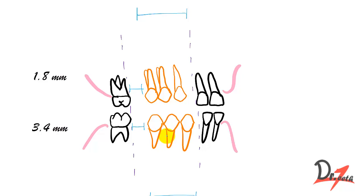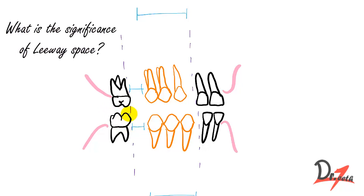Now you must be having a question in your mind: what is the significance of leeway space? This leeway space is utilized by the molar to drift mesially. So this molar will drift mesially and will help establish the Class 1 molar relation. Hence, our mandibular molar utilizes this space to move mesially and thus establish Class 1 molar relation.